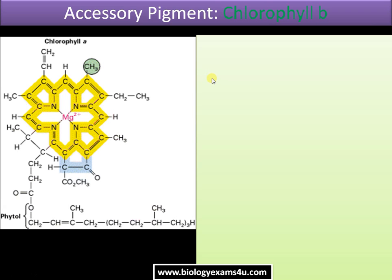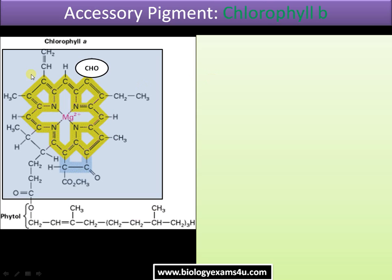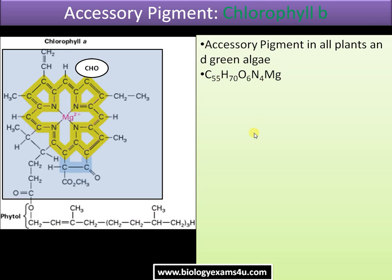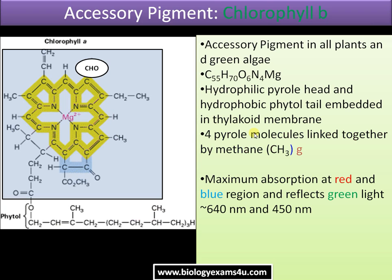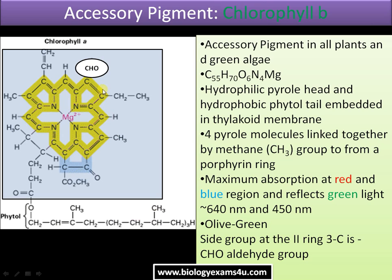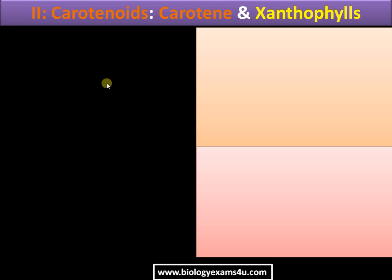Chlorophyll b is the same as chlorophyll a except that in the second ring, the side group is a CHO group instead of a methyl (CH3) group as in chlorophyll a. The formula is C55 H70 O6 N4 Mg. Maximum absorption is in the red and blue region, and it reflects green light. That is the only structural difference between chlorophyll a and chlorophyll b.